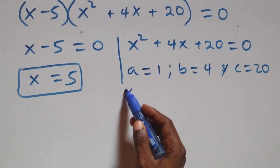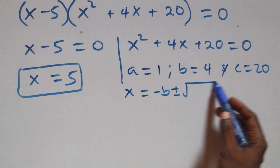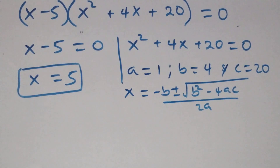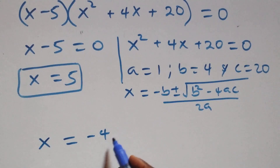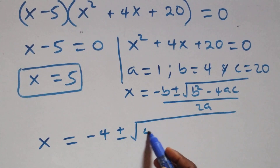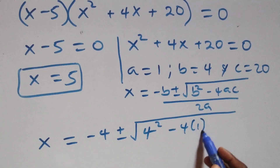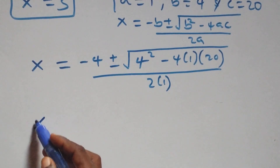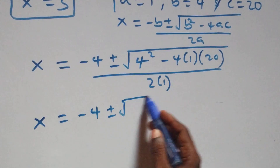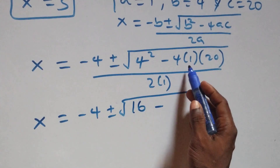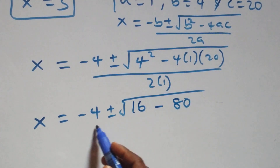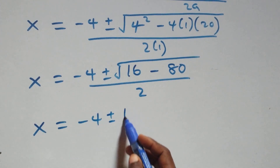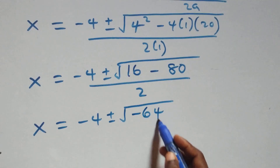Applying the quadratic formula: x equals to minus b plus or minus square root of (b² - 4ac), all over 2a. Substituting: x equals to minus 4 plus or minus square root of (4² - 4 times 1 times 20) over 2, which gives minus 4 plus or minus square root of (16 - 80), that's square root of minus 64, all over 2.